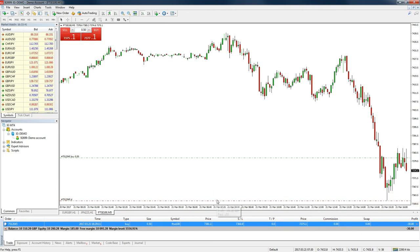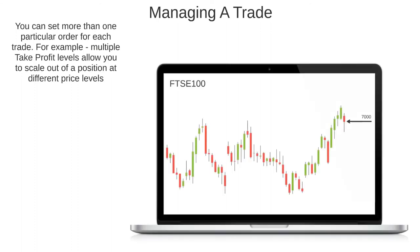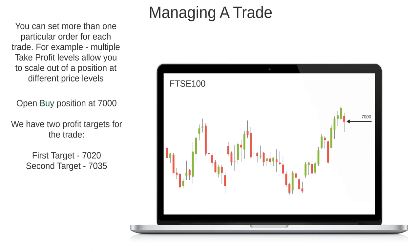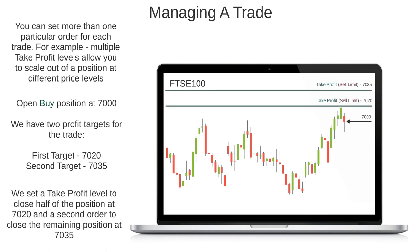This will then automatically update the trade entry in the order window with the new level. You can also set more than one particular order for each trade, which enables you to scale out of a trade at different prices if desired. For example, if we entered a buy position on the FTSE 100 at 7,000 and had 2 profit targets — one at 7,020 and one at 7,035 — we could set a take profit level to close half of the position at the first target and another take profit level to close the remaining half at the second. The ability to do this is sometimes not possible with certain platforms or brokers, but you can work around this by entering 2 or more separate positions if scaling in or out is something you wanted to do.